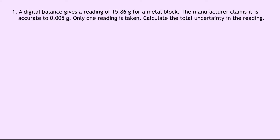Question one says a digital balance gives a reading of 15.86 grams for a metal block. The manufacturer claims it is accurate to 0.005 grams. Only one reading is taken. Calculate the total uncertainty in the reading. Well, the first thing we need to think about is what is our calibration uncertainty, our scale reading uncertainty, and our random uncertainty. So my calibration uncertainty first of all is equal to plus or minus 0.005 grams.